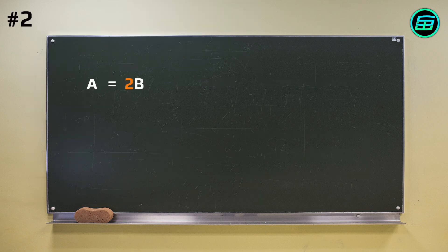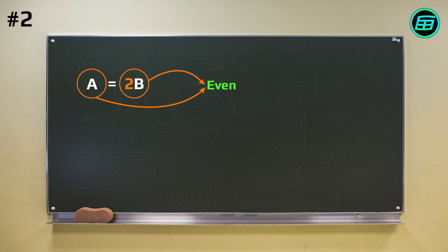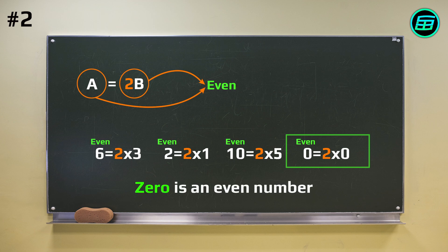When we multiply an integer by 2, the result is always an even number. So 0 is an even number.